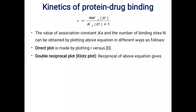The value of association rate constant Ka and the number of binding sites n can be obtained by plotting the above equation in different ways. It is important to determine Ka because from that we will come to know to what extent protein binding takes place, which affects the dose of the drug and the concentration of the drug. That's why it is essential to determine both Ka and n.